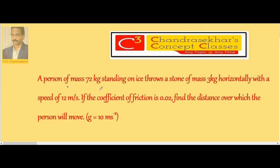A person of mass 72 kg standing on ice throws a stone of mass 3 kg horizontally with a speed of 12 meter per second. If the coefficient of friction is 0.02, find the distance over which the person will move. Here the person, 72 kg mass, throws a 3 kg body with a velocity 12 meter per second.